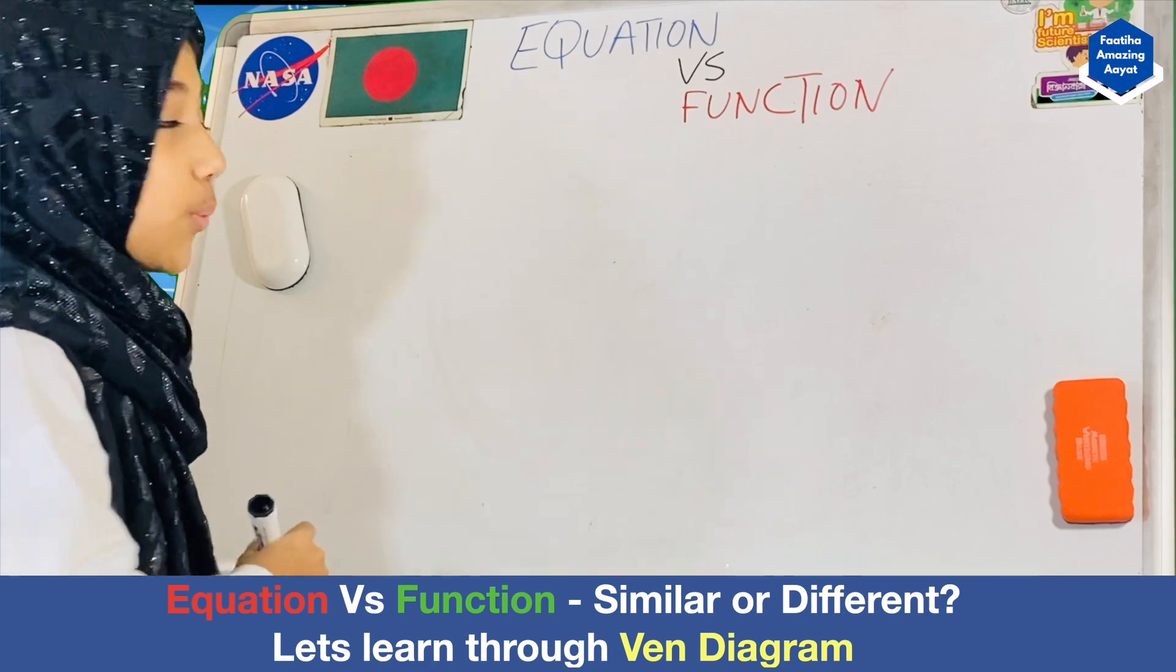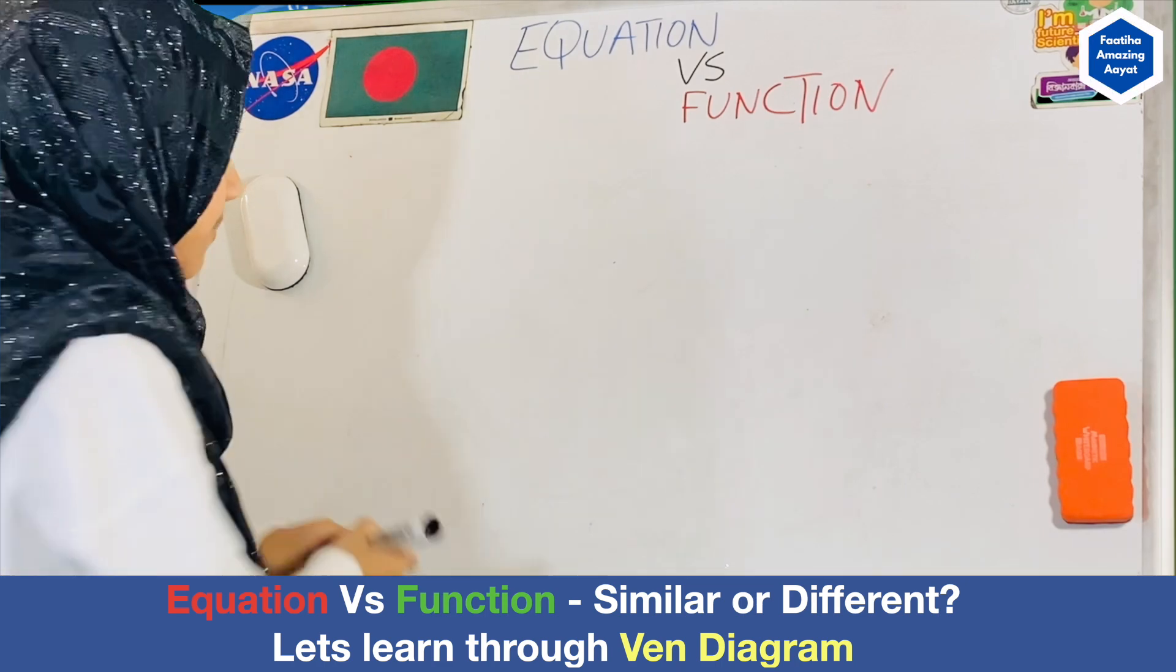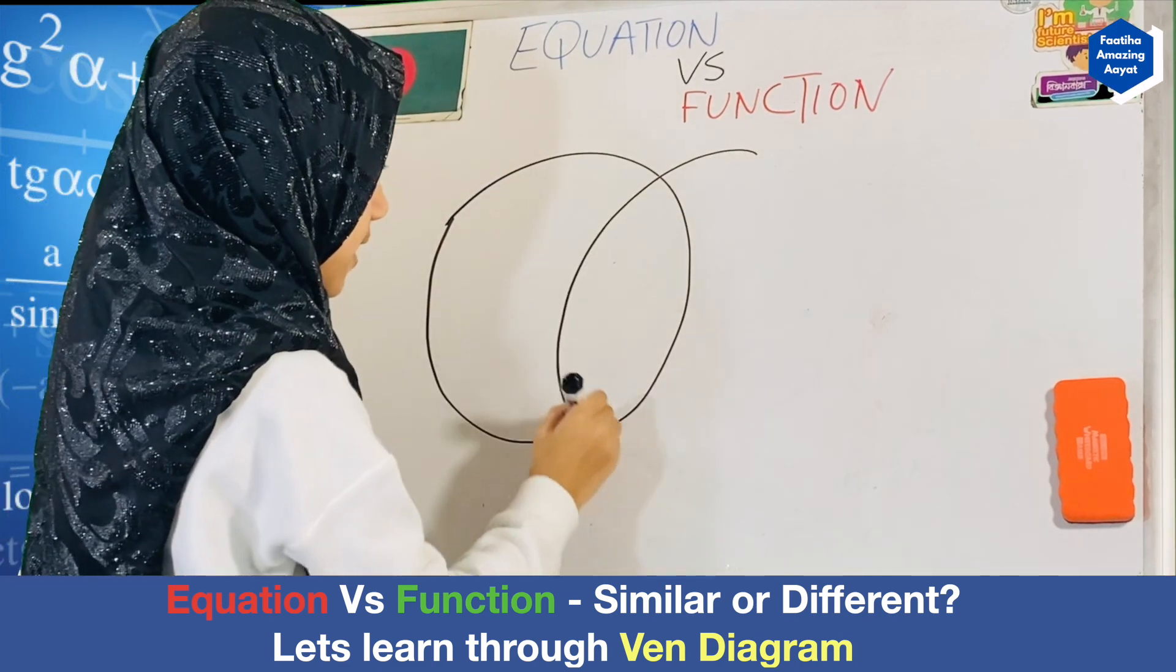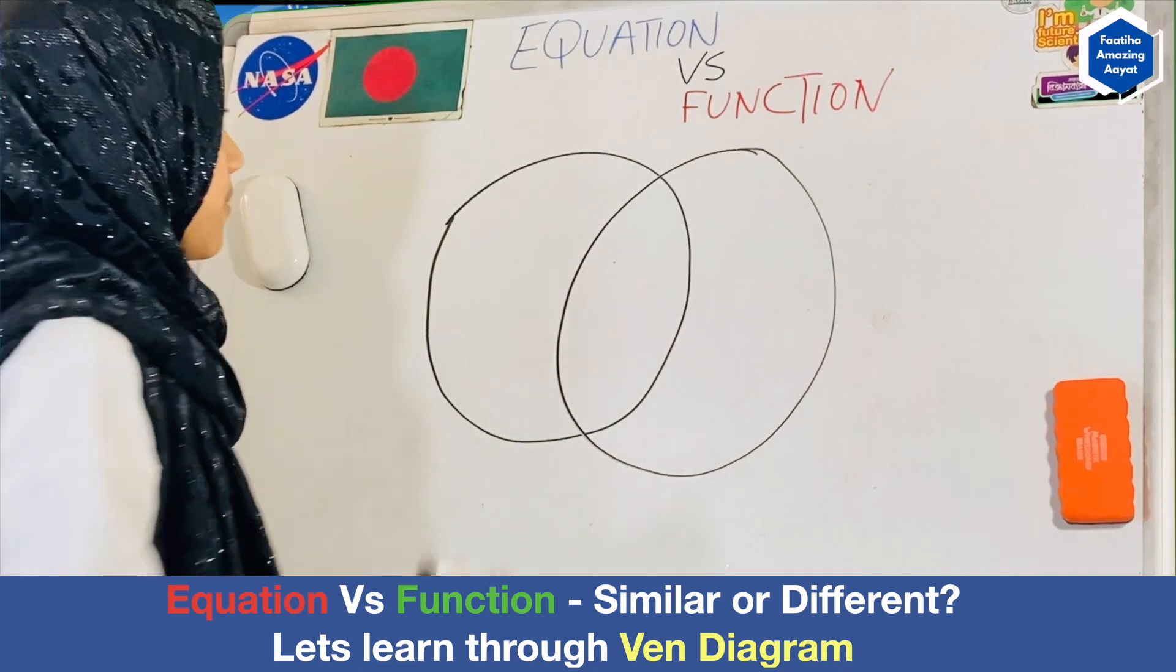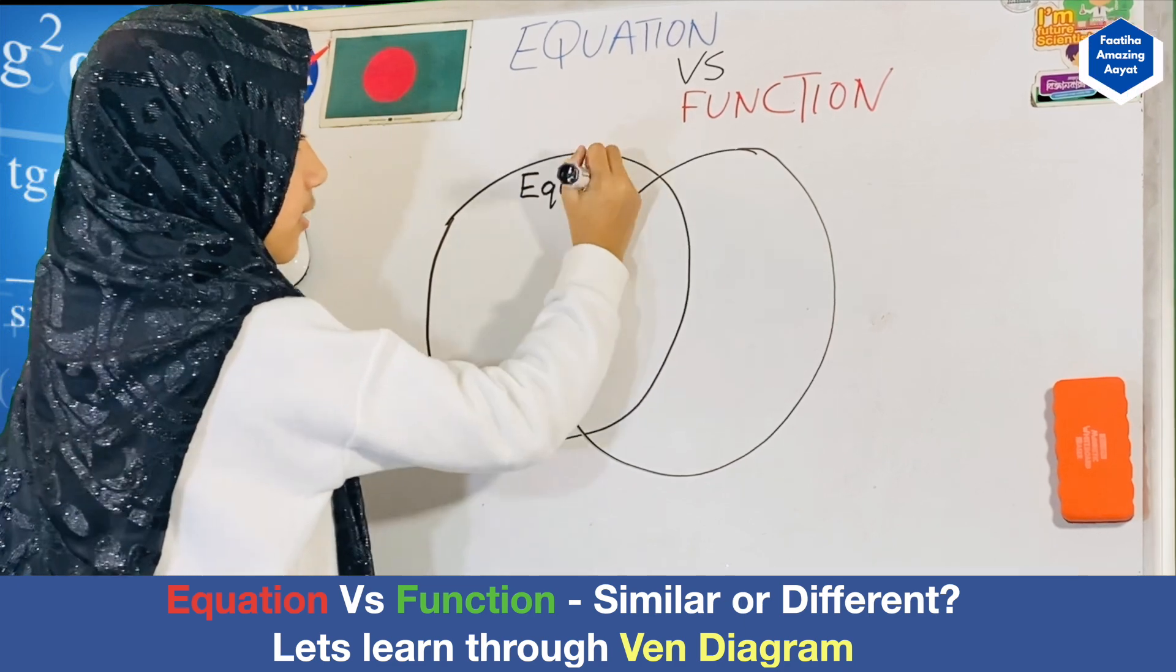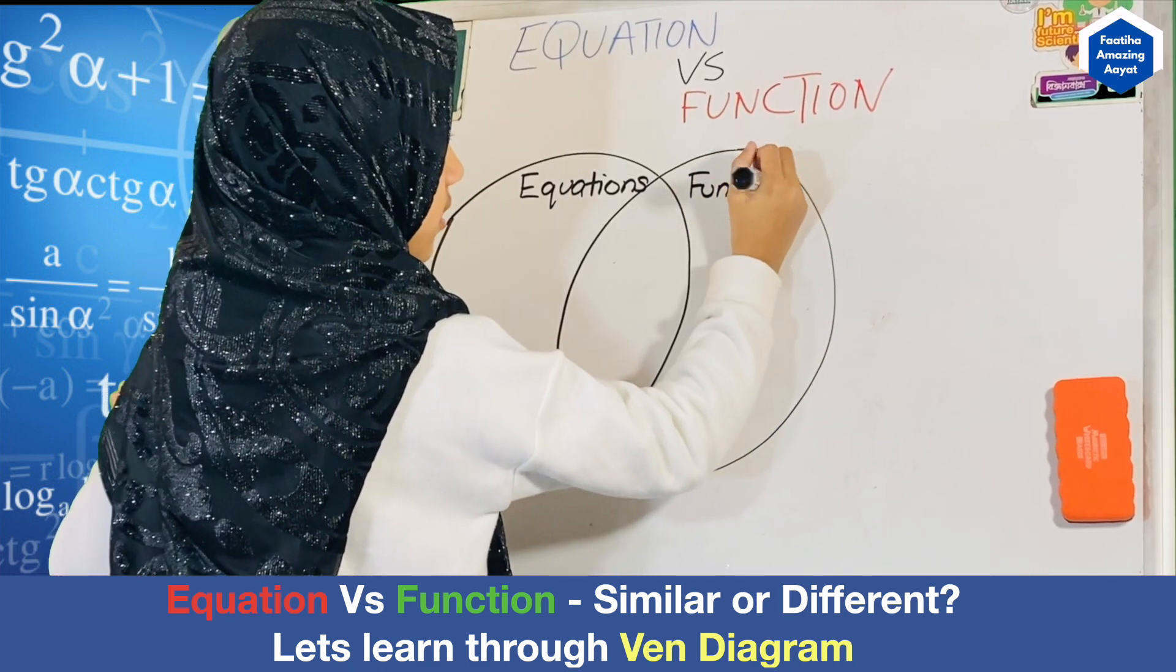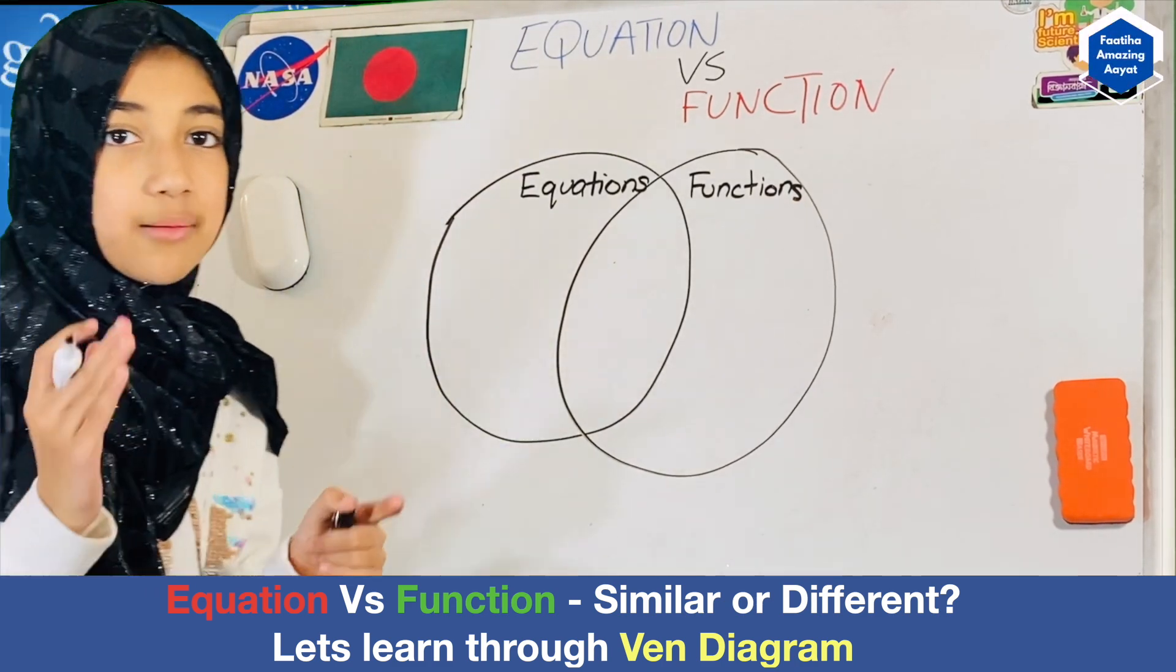Okay, well, the answer is I'm going to give you using a diagram. I'm going to use the Venn diagram. So let's say this is one of my circles right here. And my other circle right here. Let's say this side is the equation side, and my other side is the functions. And the middle, as we all know, is equations and functions.